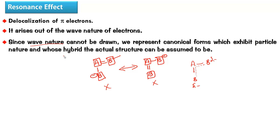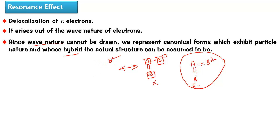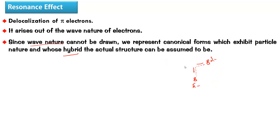The actual structure is the hybrid — it is a mix, it is only one structure. Since the electron is a wave, it is not fixed at one place; it is delocalized. Therefore we draw the canonical parent structures and claim that the actual molecule is their hybrid. The actual structure is the hybrid, not any of the canonical forms. Now let us understand how to draw or interpret the hybrid and how it relates to the parent structures.